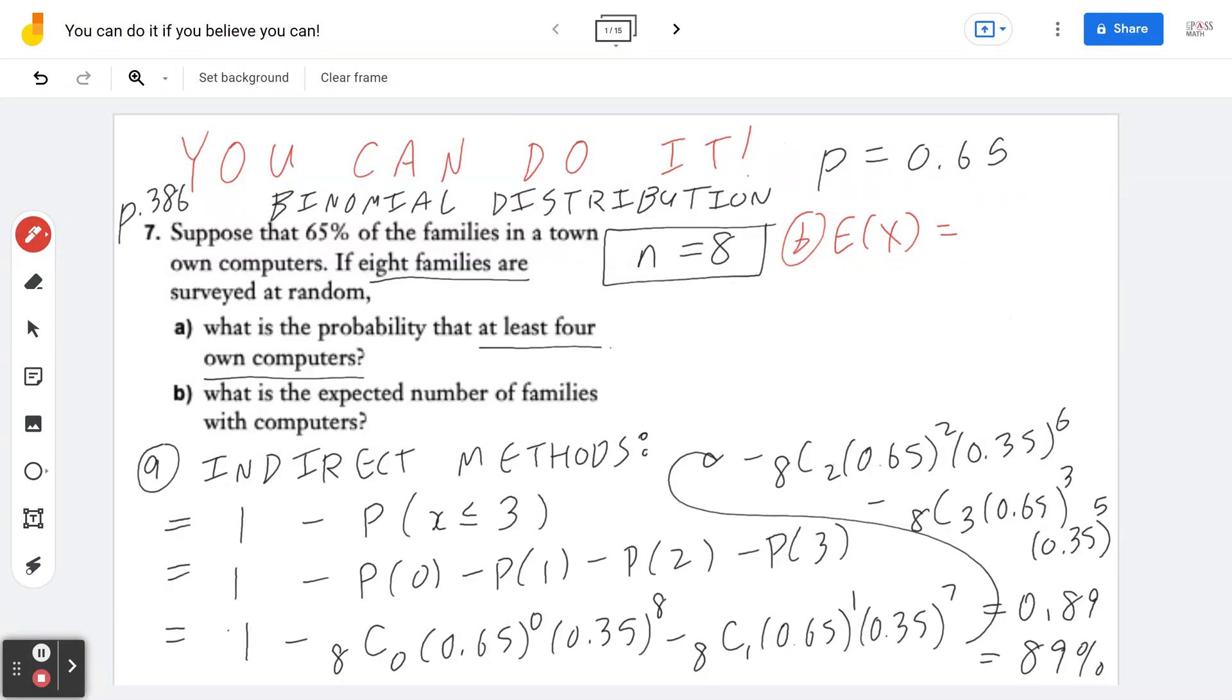Because we recognize it's going to be binomial distribution, there's a formula that we can use, which is N times P. So in this case, N is going to be 8. P is going to be 0.65. You can grab the calculator or do mental math. And this is going to be exactly 5.2.